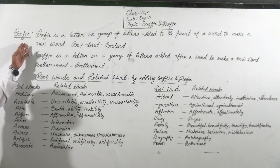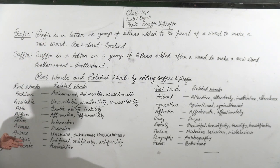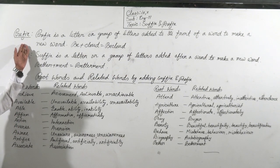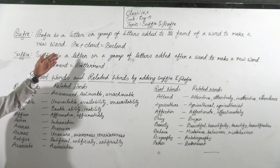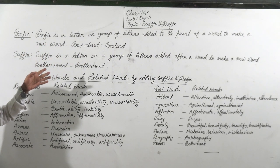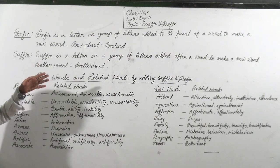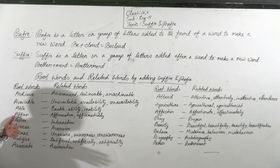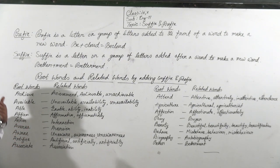What is prefix? Prefix is a letter or group of letters added to the front of a word to make a new word. I am again saying — what is prefix? Prefix is a letter or a group of letters added to the front of a word. Why? To make a new word.